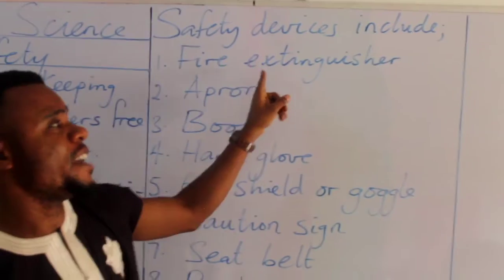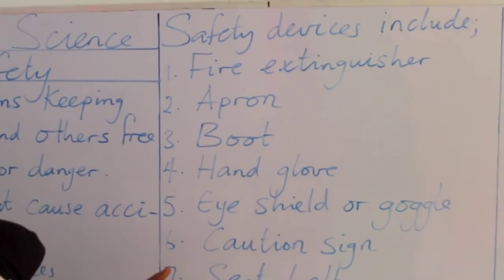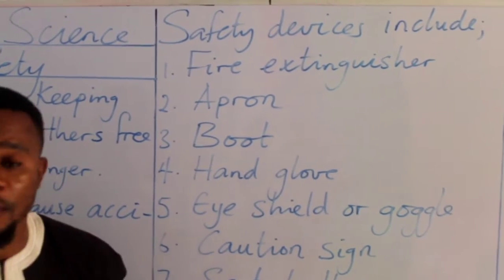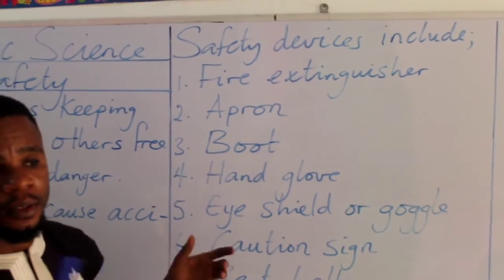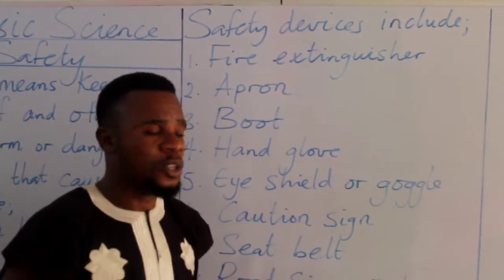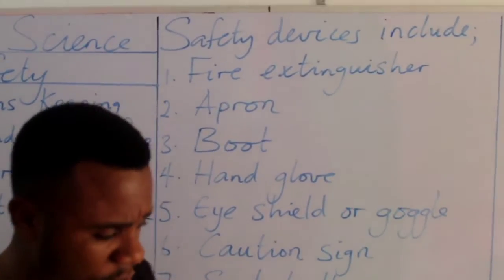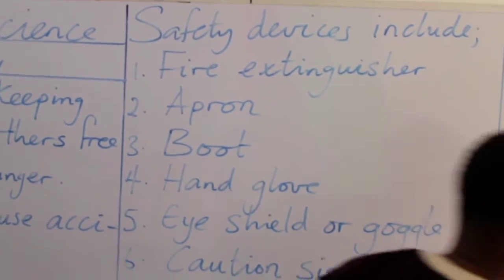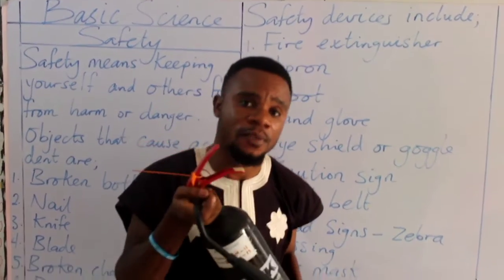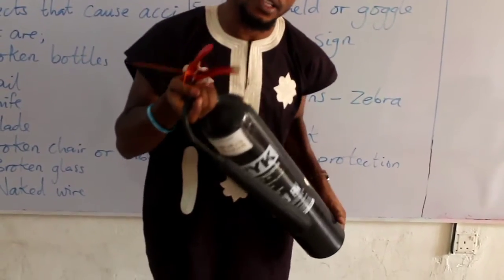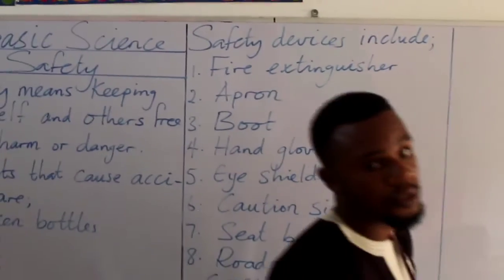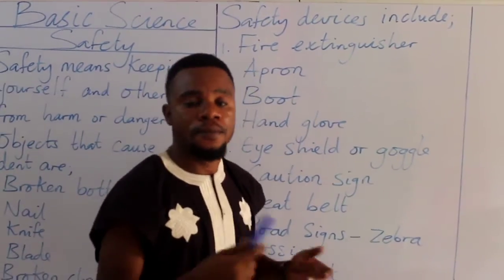The first safety device is the fire extinguisher. When there is an outbreak of fire, you use it to quench the fire. It is very heavy and it is meant for adults, not for children. Don't go lifting it because it might be dangerous if it slips off your hands and hits your foot.